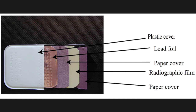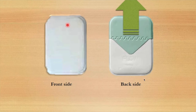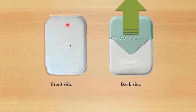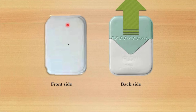Inside the packet we have a lead foil, then a black paper cover which envelops the radiographic film. The lead foil is placed on the back of the plastic cover. The film has two sides: the front side and the back side. The proper white side — the front — should be placed facing towards the tube, while the other side faces the intraoral structures inside the mouth.